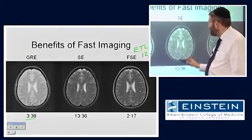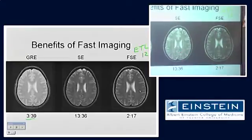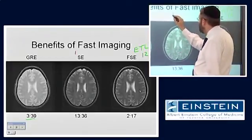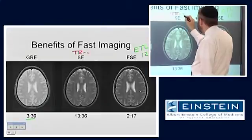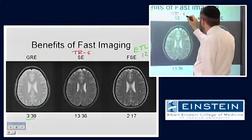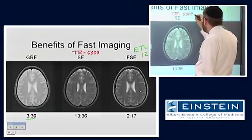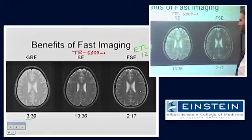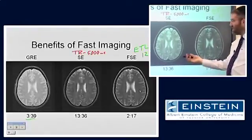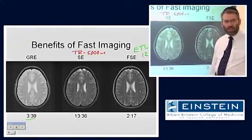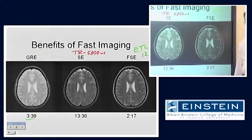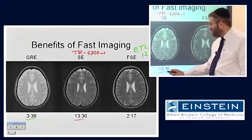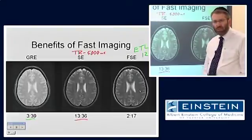This is the T2-weighted spin-echo image. The TR in this case is 5,000 milliseconds. This is standard multi-slice spin-echo imaging, like we looked at before, and it takes a really long time. We don't do this — it was done specifically so I can show you an example of what it looks like.